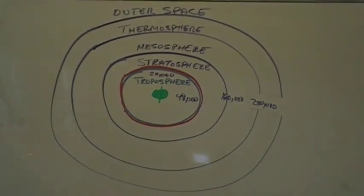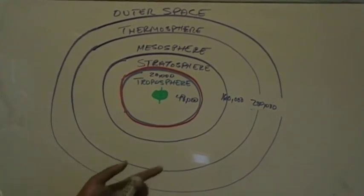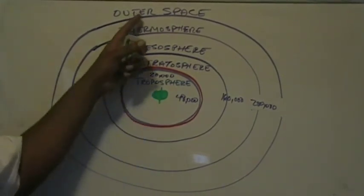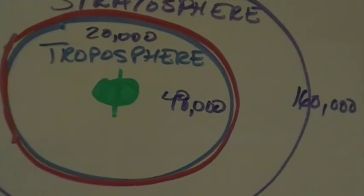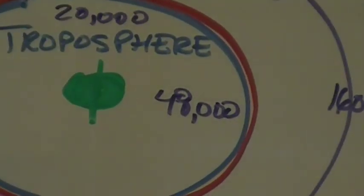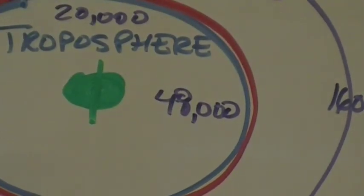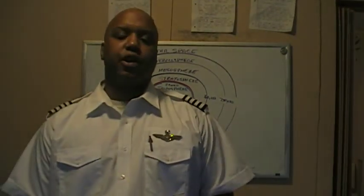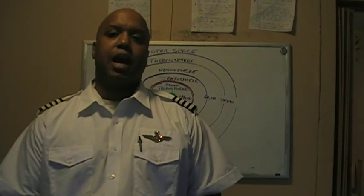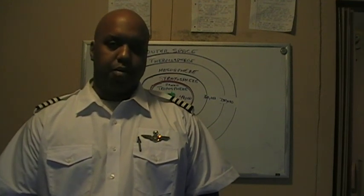We talked about the composition of the atmosphere and the atmospheric levels. The main thing we're really going to focus on is what goes on in the troposphere, because that's where we fly our planes. Unless you're going to be an astronaut, you wouldn't need to focus on the other layers — but it's a good idea to understand the atmospheric levels. Thanks for watching!